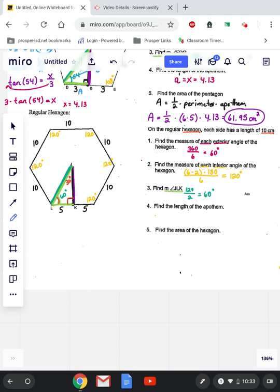So for number four to find the length of the apothem, this purple line, we can use our special right triangles, or we can use a hashtag. Or if you don't need to use a hashtag, don't use it. But there is a pattern here. So remember, it goes 30, 60, 90.